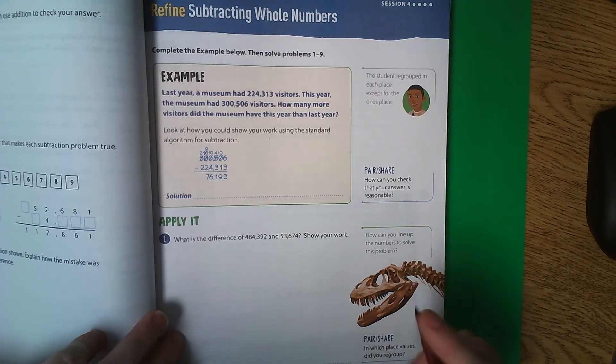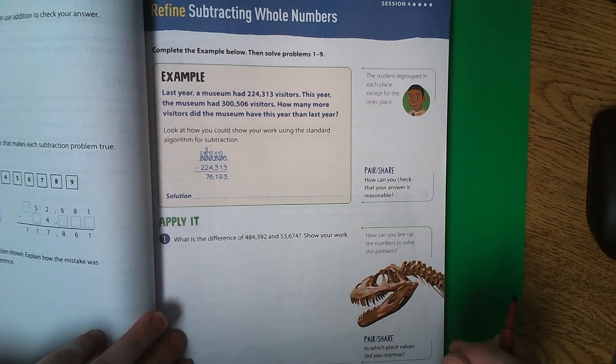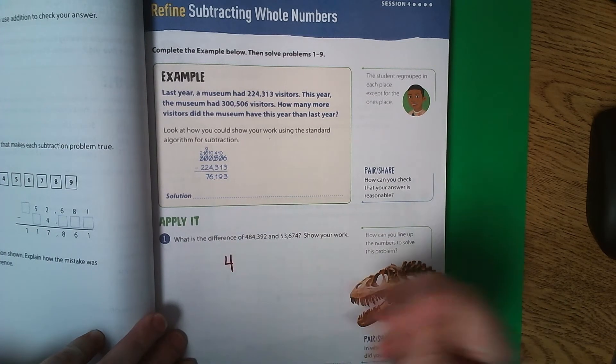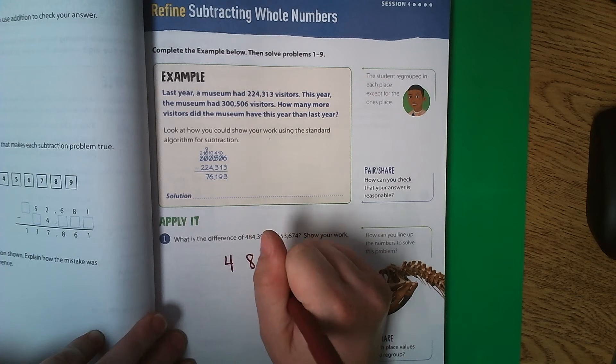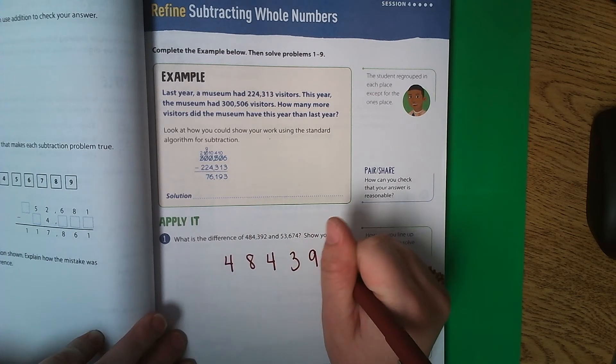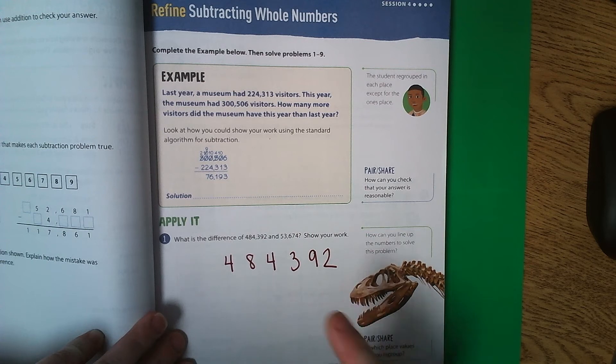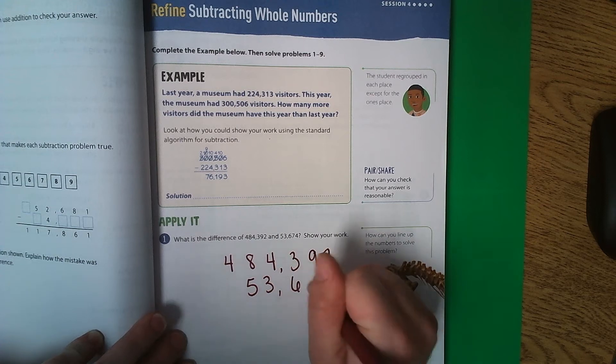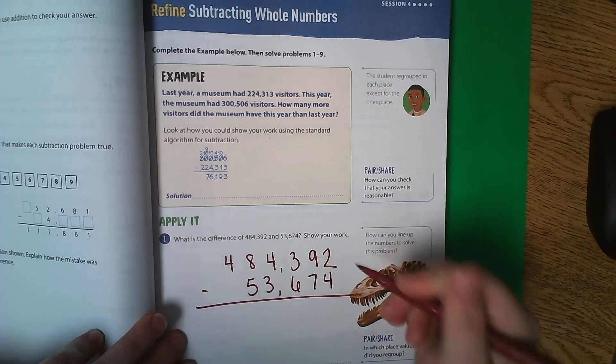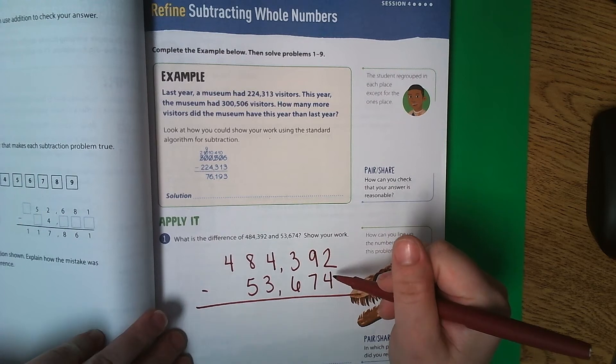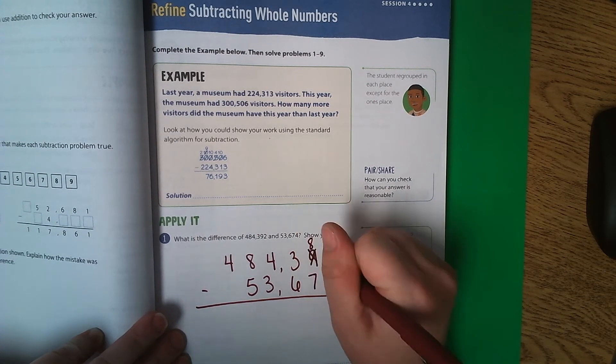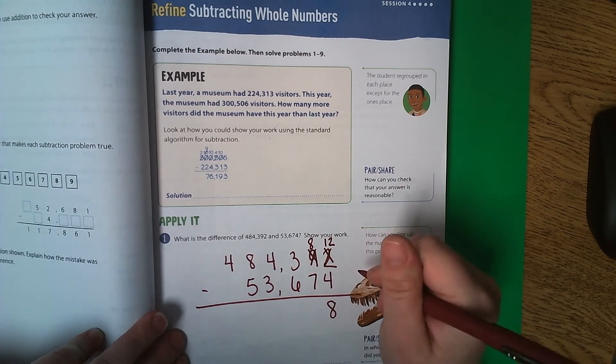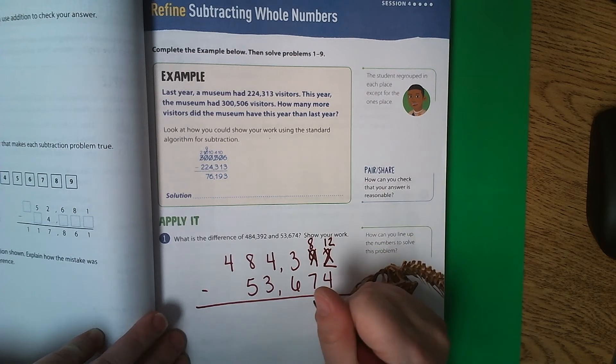Number 1, what is the difference of 484,392 and 53,674? It says show your work. So I'm going to write these numbers out. Notice again how I'm spacing them a little bit further apart. And then I'm subtracting. 2 minus 4, I cannot do that. So this 9 becomes an 8 and 2 becomes a 12. 12 minus 4 is 8.